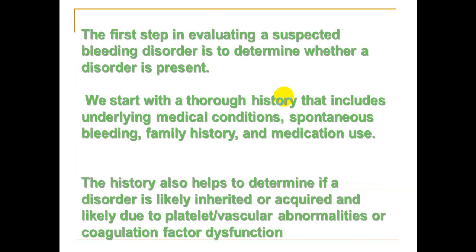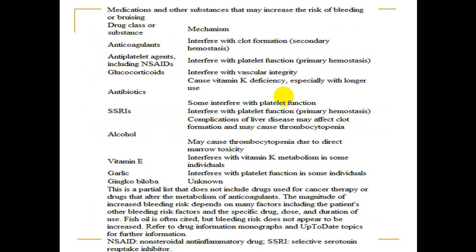The first step in evaluating patients suspected of bleeding disorders is confirming the disorder. We start with a thorough history including medical conditions, any spontaneous bleeding, family history — which is very essential — and medication history. History also helps determine if the disorder is likely inherited or acquired, and whether it is due to platelet, vascular, or coagulation abnormalities.